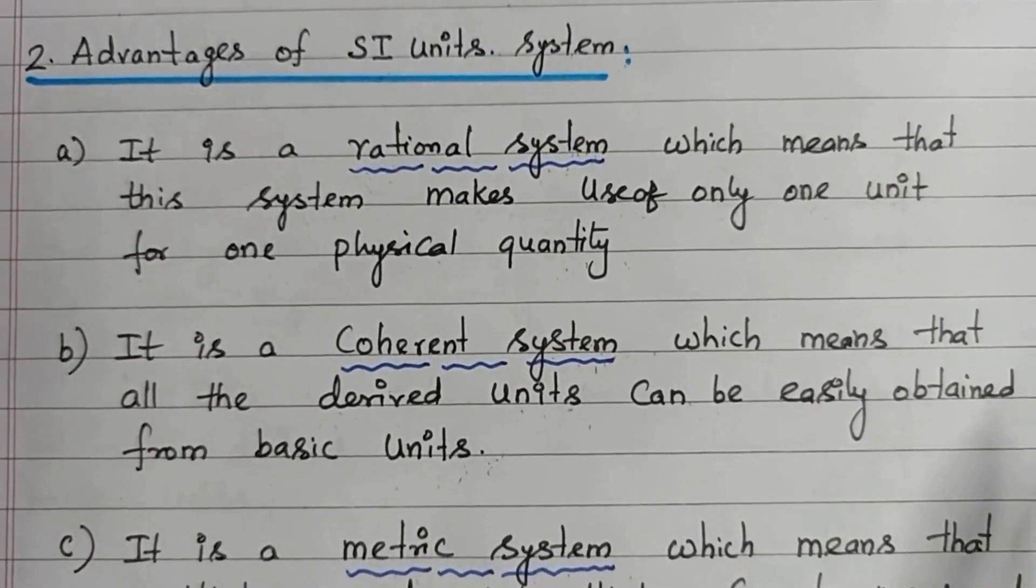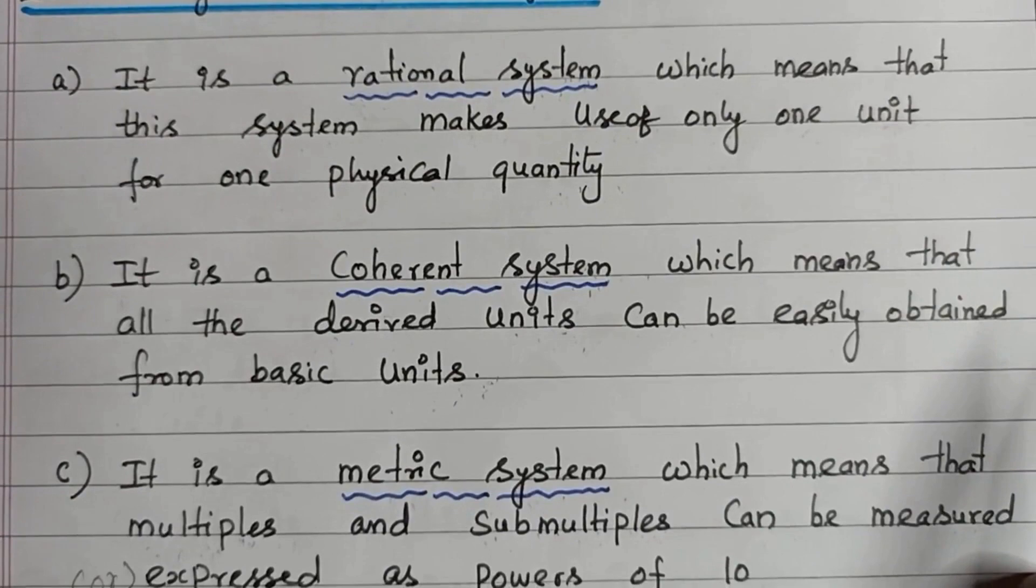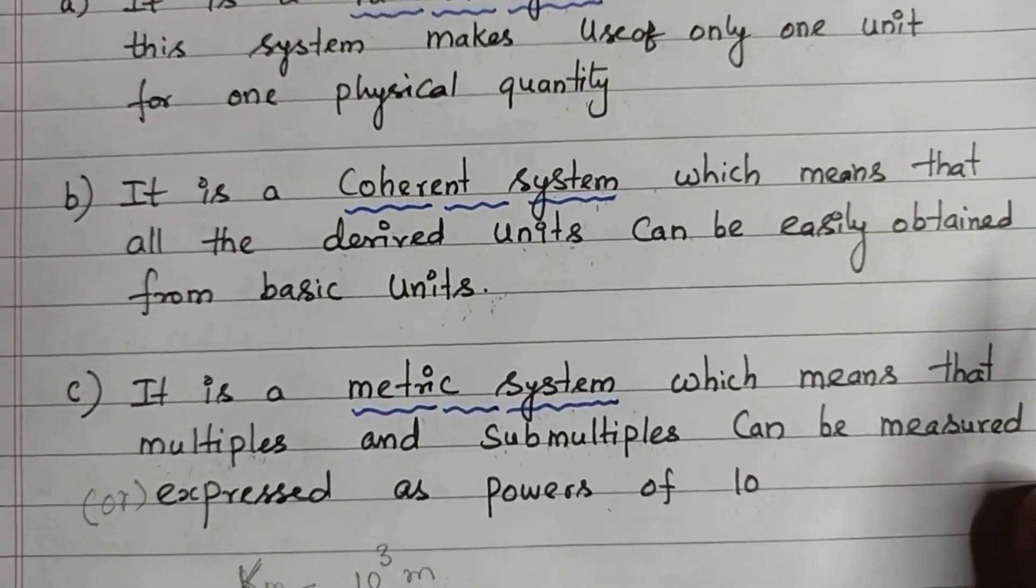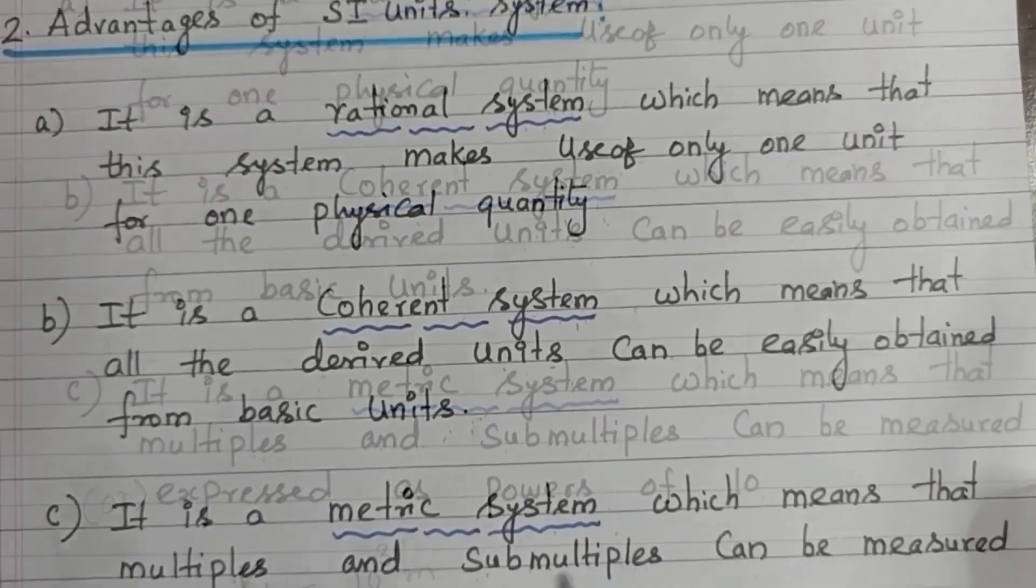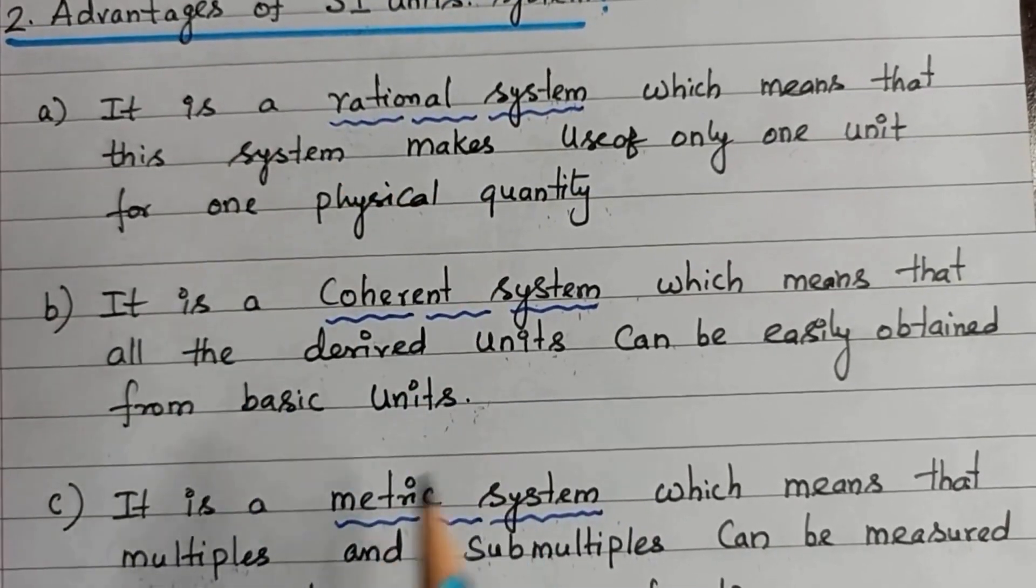First, SI Unit is a rational system. Second, SI Unit is a coherent system. Third, SI Unit System is a metric system. These are the advantages of SI Unit System.